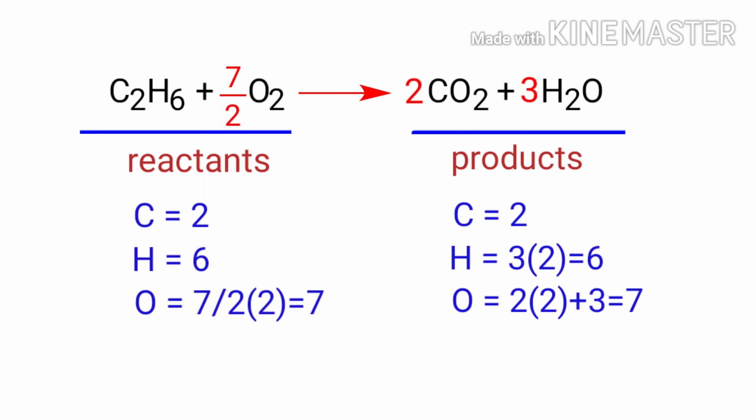In this equation, 7 by 2 is a rational number. We don't use rational numbers for a Molecule. So to get whole numbers, we need to multiply the Equation by a Coefficient of 2.